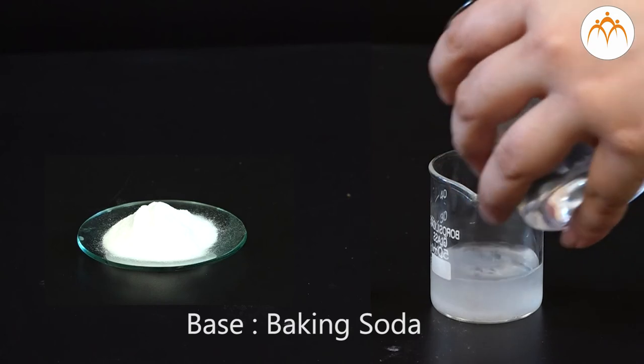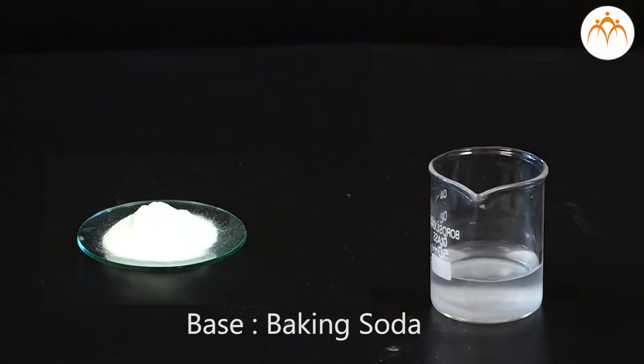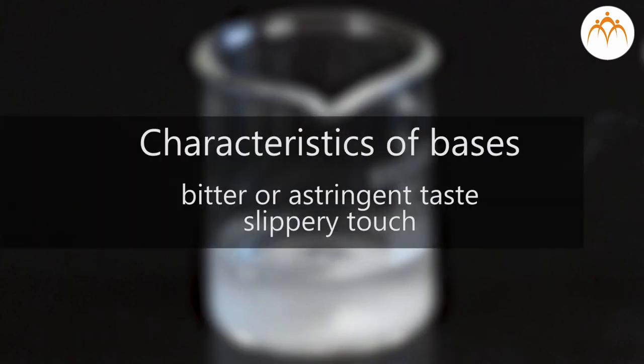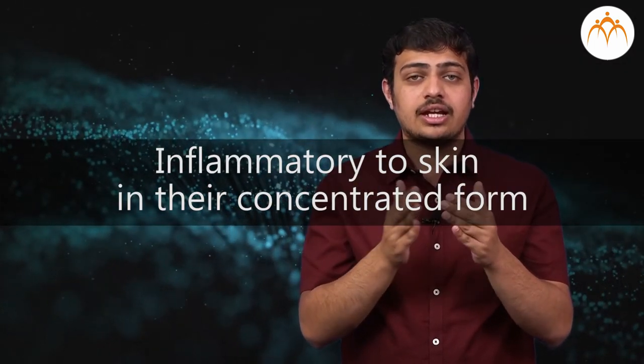Now let us consider these items or substances that taste bitter. We will make their dilute solutions in water and see what happens. Yes, these taste bitter and are slippery to touch. These are called bases. The bitter or astringent taste and slippery touch are typical characteristics of bases. They are also inflammatory to skin in their concentrated form, but all other chemical properties of bases are completely different from acids.